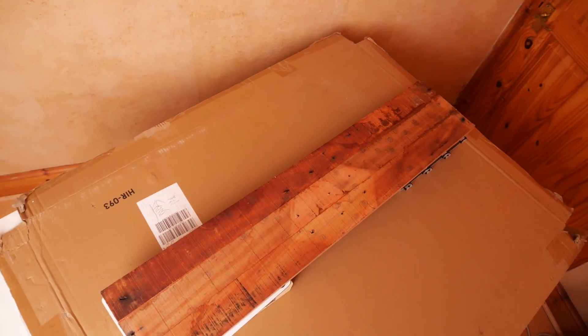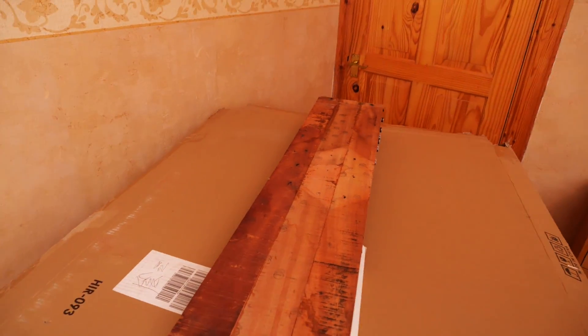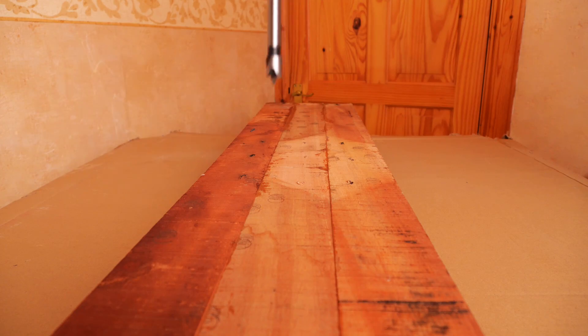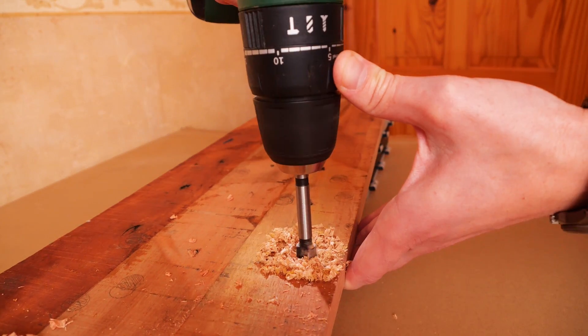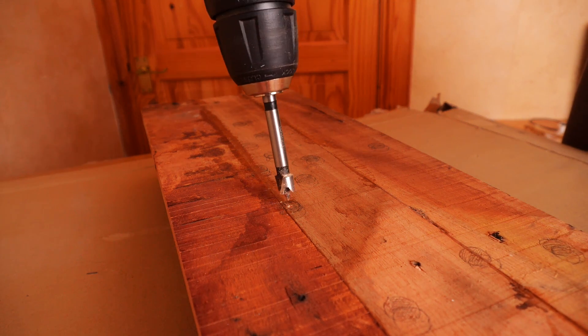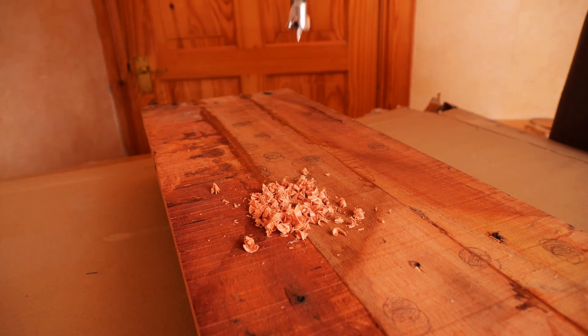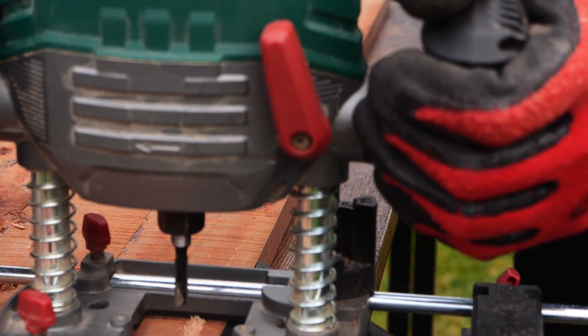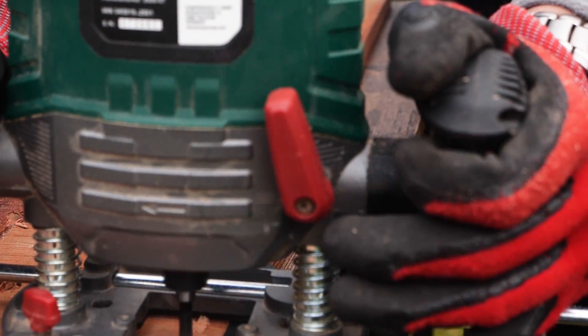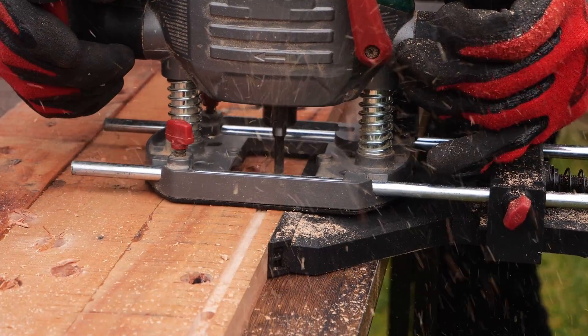I will glue three of them together to achieve the right dimensions. Once the glue is set, I need to drill some precisely placed holes to hold the letters. At this stage, I'm using my router to make room for the electronics, which I will handle later.